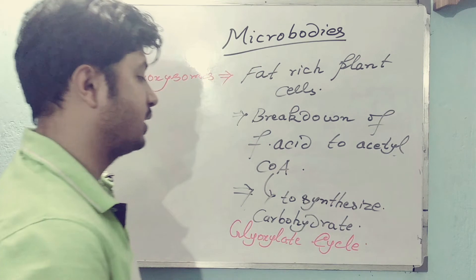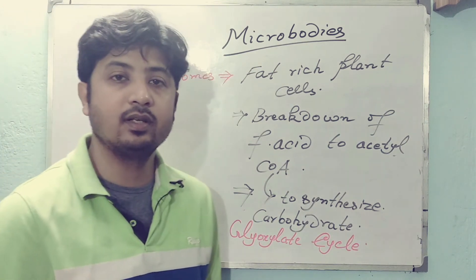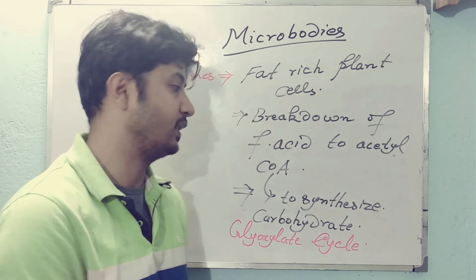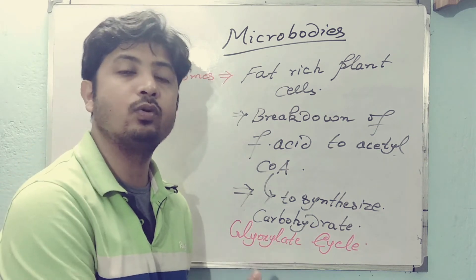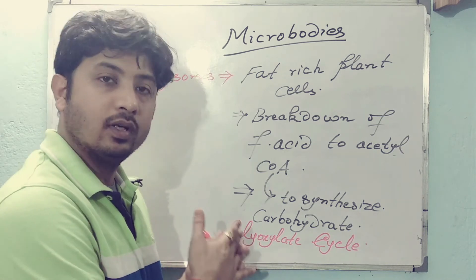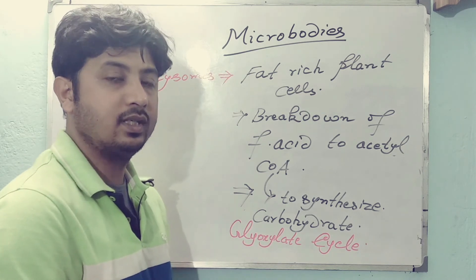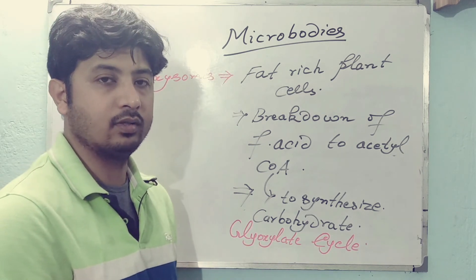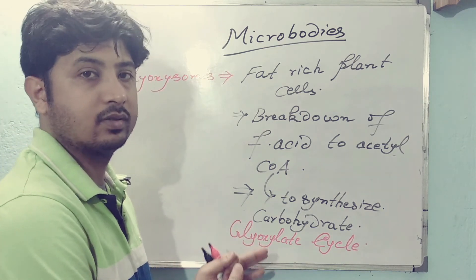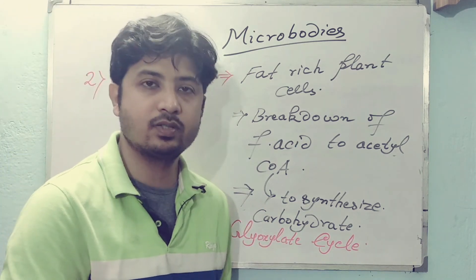The glyoxylate cycle generally takes place in plants, bacteria, and some kinds of protozoa when there is a scarcity of complex carbon molecules like glucose. At that time, a simple carbon molecule like acetyl CoA is used inside the cell to synthesize carbohydrates. So glyoxysomes are a very essential microbody for survival in critical situations.